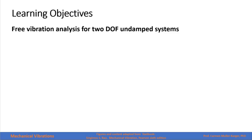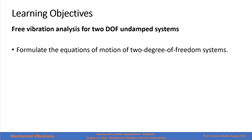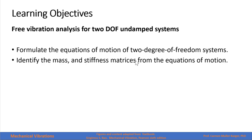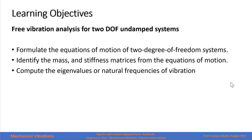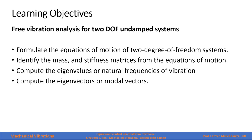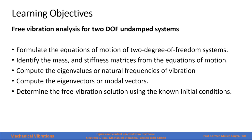In this presentation we will study Free Vibration Analysis for a 2 Degrees of Freedom Undamped system. We will have the following learning objectives: formulate the equation of motion of a 2 Degrees of Freedom system, identify the mass and stiffness matrices from the equation of motion, compute the eigenvalues or natural frequencies of vibration, compute the eigenvectors or modal vectors of the system, and determine the Free Vibration solution using known initial conditions.